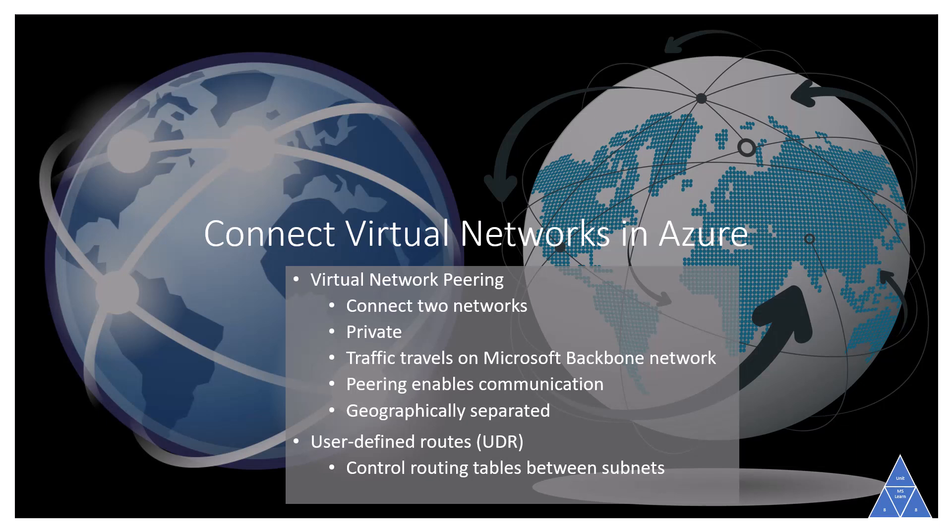You can link virtual networks together using virtual network peering. Peering allows two virtual networks to connect directly to each other. Network traffic between peered networks is private and travels on the Microsoft Backbone Network, never entering the public internet. Peering enables resources in each virtual network to communicate with each other, and these virtual networks can be in separate regions, allowing you to create a global interconnected network through Azure. User-defined routes allow you to control the routing tables between subnets within a virtual network or between virtual networks, allowing greater control over network traffic flow.